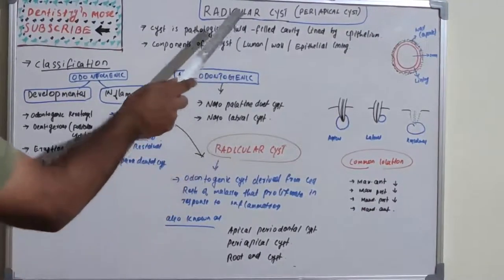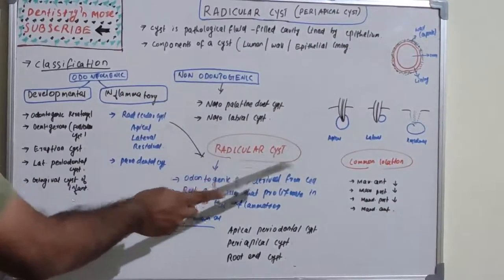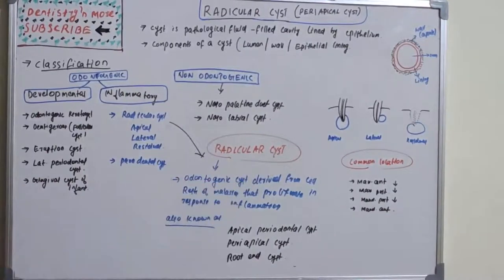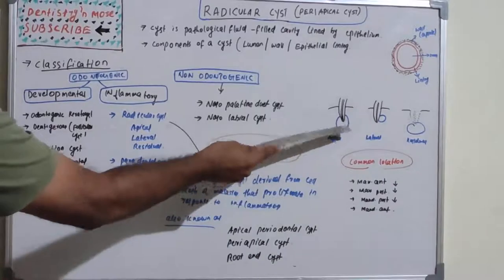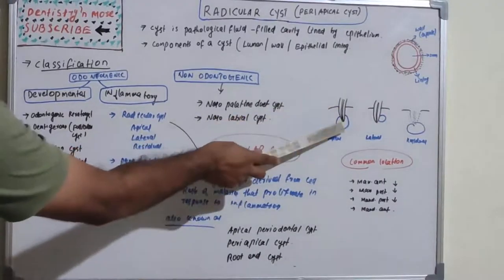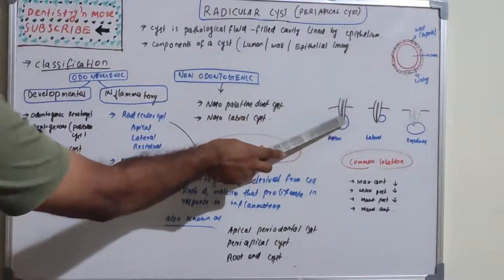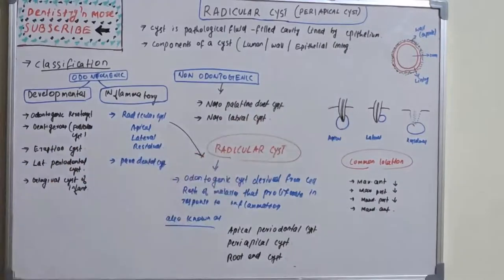Radicular cyst is an odontogenic cyst derived from cell rests of Malassez, which proliferate in response to inflammation. It is seen at the root tip. When caries occurs and is not treated, it progresses to the tip of the root, causing inflammation and eventually forming a cyst — that is the basic concept of radicular cyst.